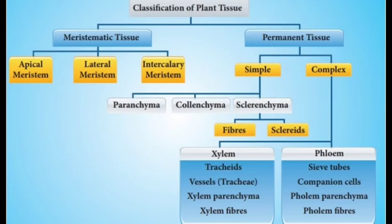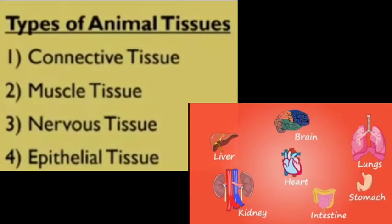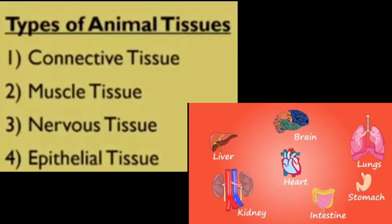Plants and animals therefore have different types of tissues to perform necessary functions. In the chart you can see the different types of tissues present in plants: meristematic tissue and plant permanent tissue. In meristematic tissue you will see apical, lateral, and intercalary meristems — the sites of growth. Permanent tissues are of two types: simple and complex. Simple includes parenchyma, collenchyma, and sclerenchyma; complex includes xylem and phloem. In the next video we will see the function of each plant tissue.